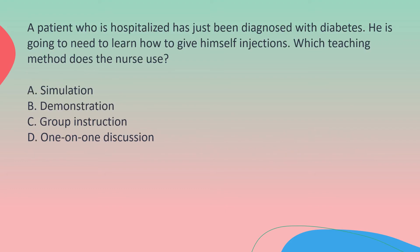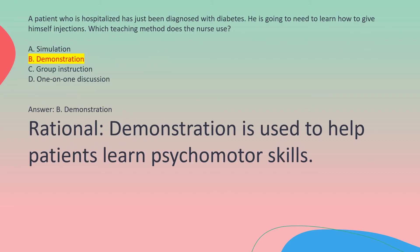A patient who is hospitalized has just been diagnosed with diabetes. He is going to need to learn how to give himself injections. Which teaching method does the nurse use? A. Simulation. B. Demonstration. C. Group Instruction. D. One-on-one Discussion. Answer: B. Demonstration. Rationale: Demonstration is used to help patients learn psychomotor skills.